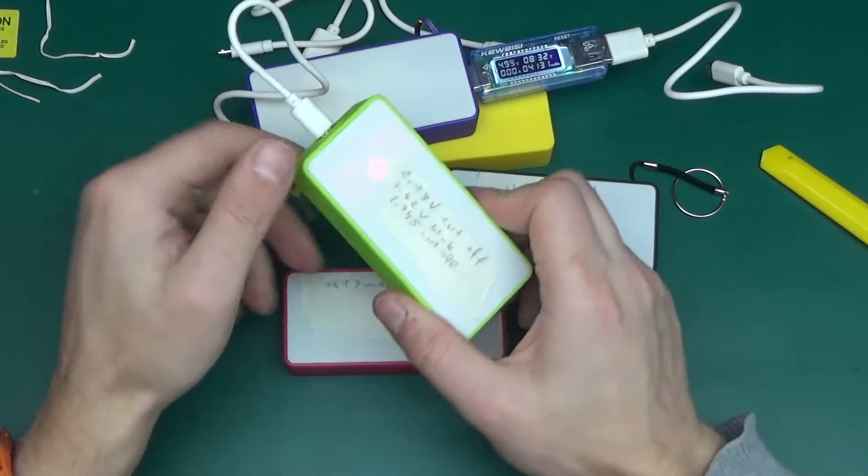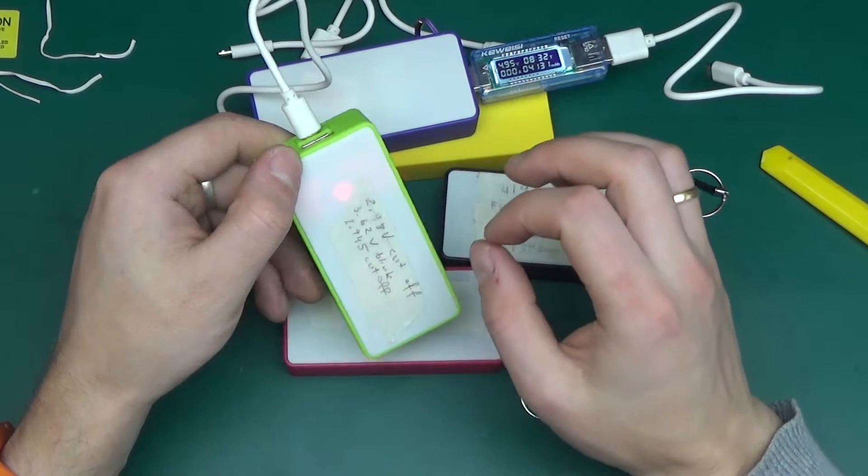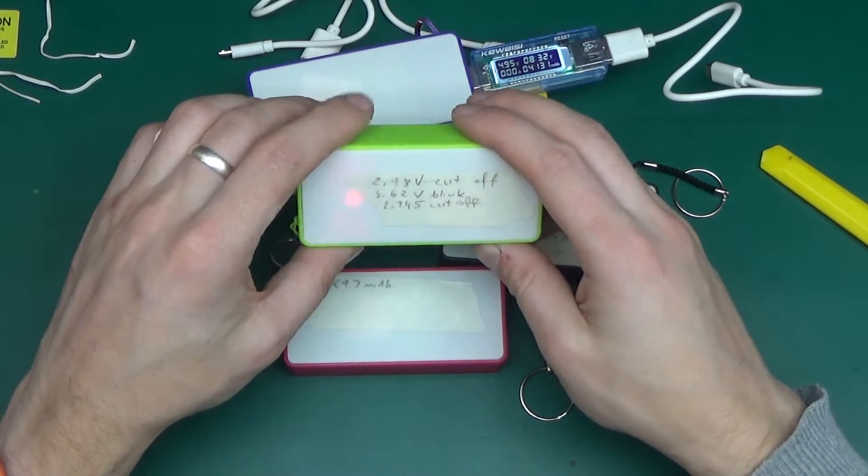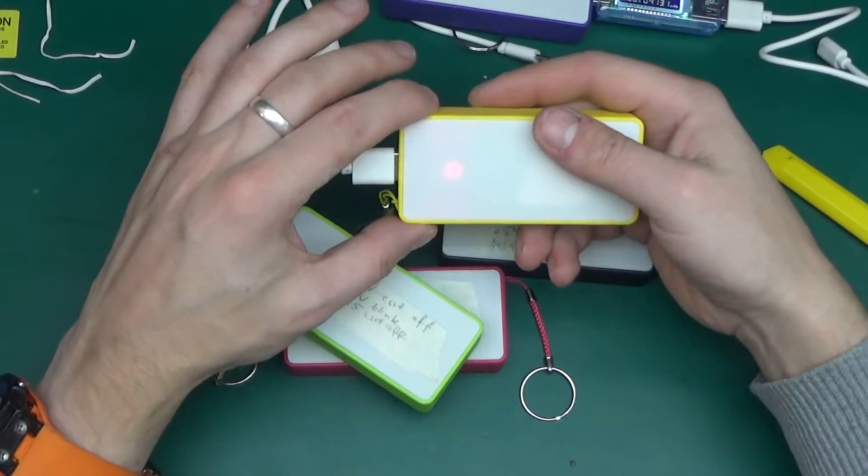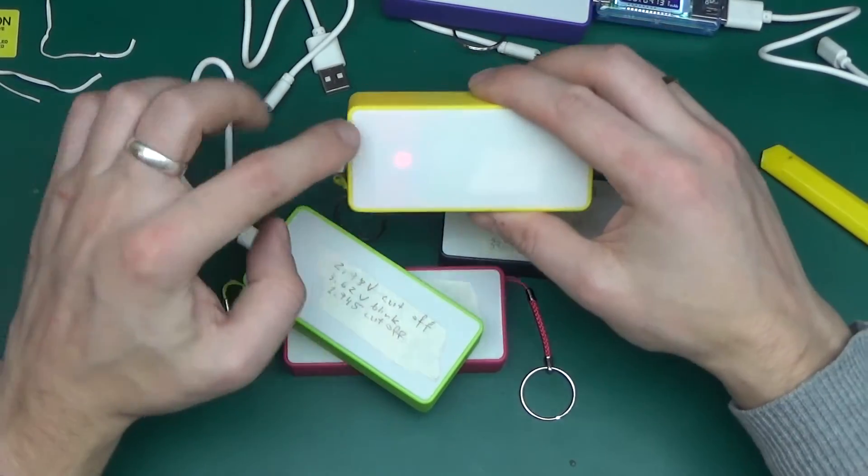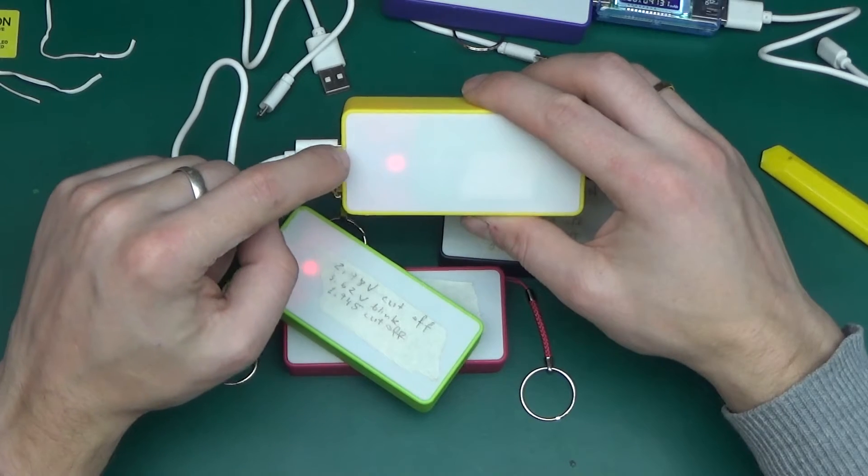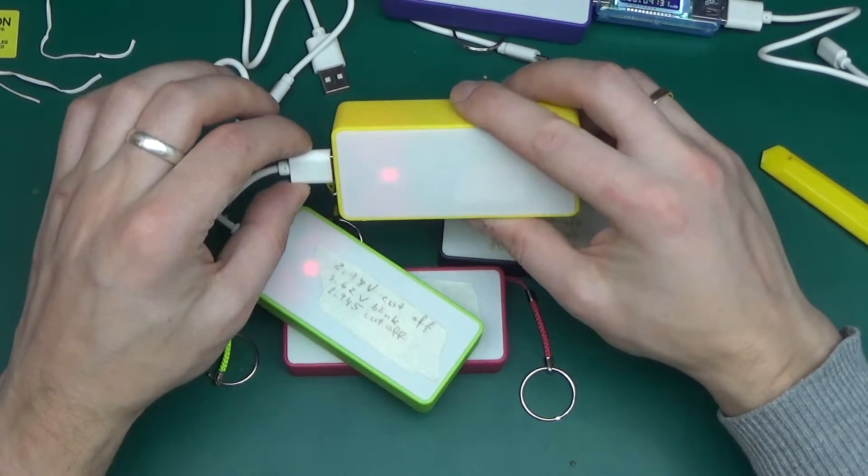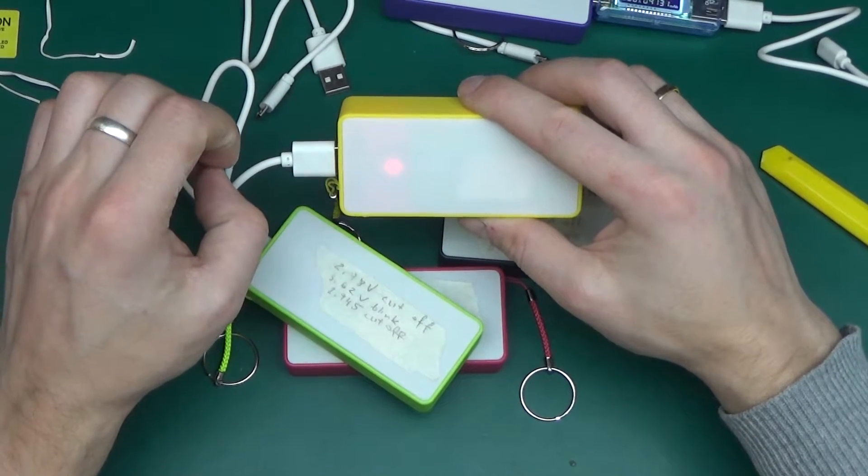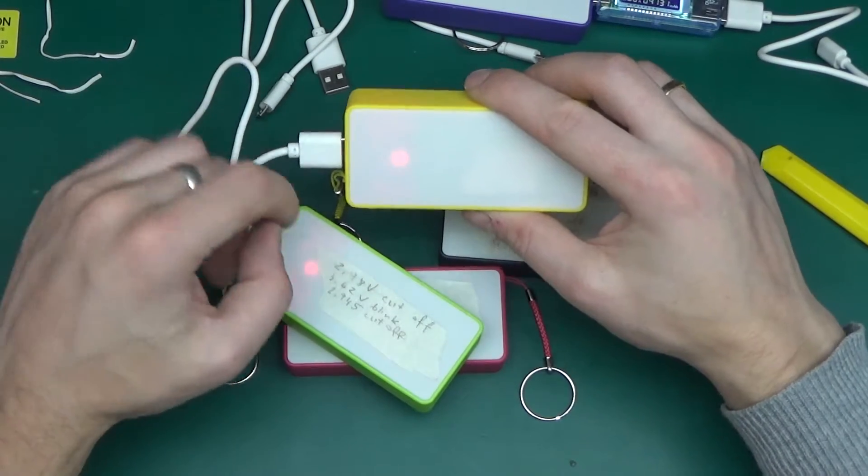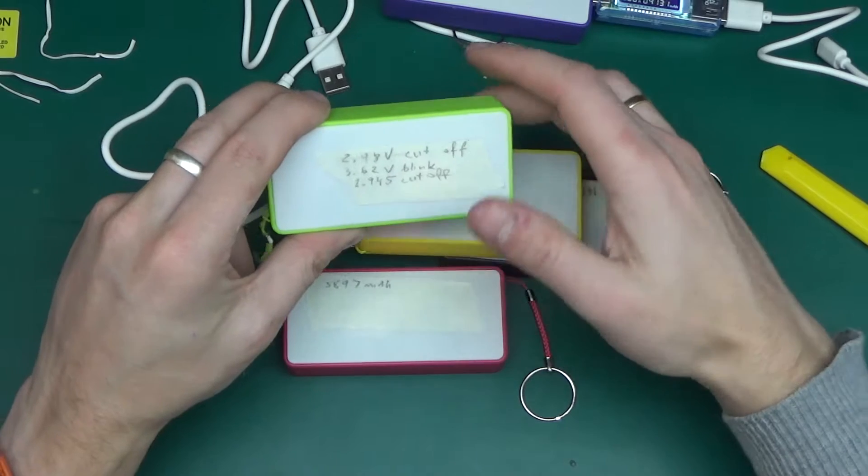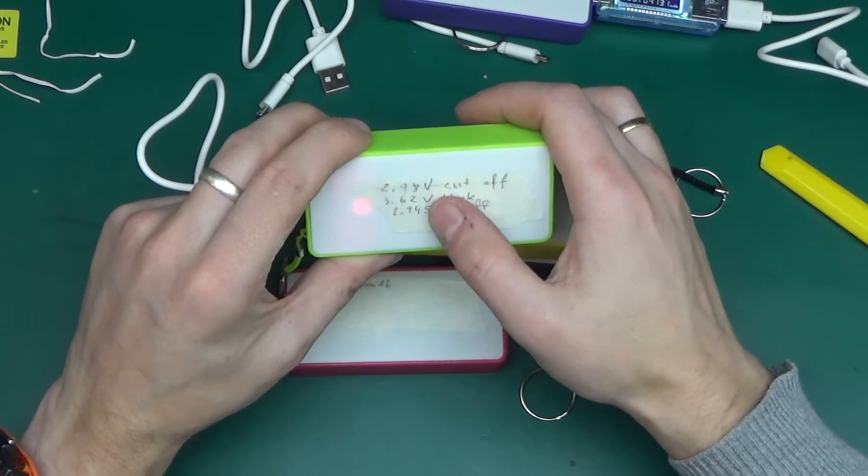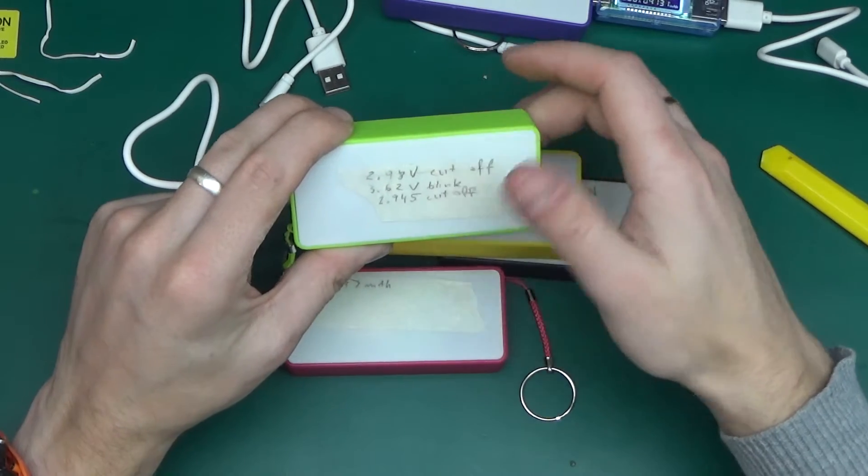They also have another function, so the LED will start blinking at 3.62 volts. At the moment, this one is providing the energy to this one, and the LED is solid. That means it's switched on. When it gets to about 3.62 volts, this LED will start blinking too, letting you know that the battery is running low, and as it gets to 2.945 volts, it will just shut off.